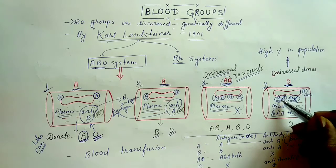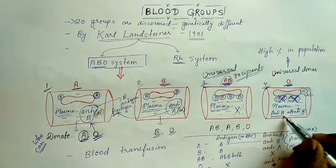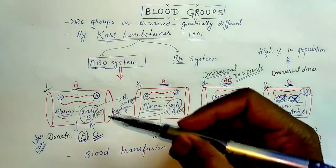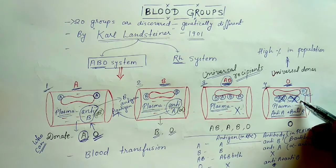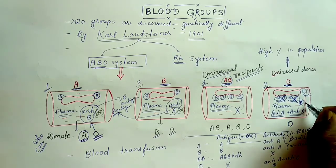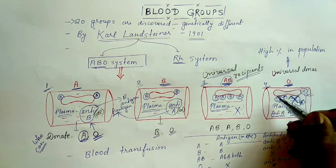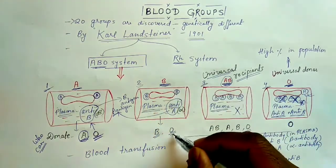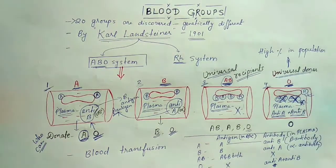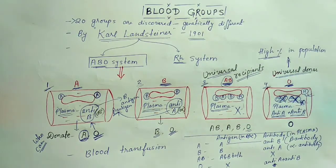In the O blood group person, neither A nor B antigen is present, and in plasma both antibodies are present. So only the same blood group O person can donate to O — otherwise, if A group RBC comes by transfusion, anti-A will react with the A antigen and destroy the RBC. However, O can give blood to anyone: O can give to AB, B, and A. So O is called the universal donor. Also, in our population, blood group O has the highest percentage.